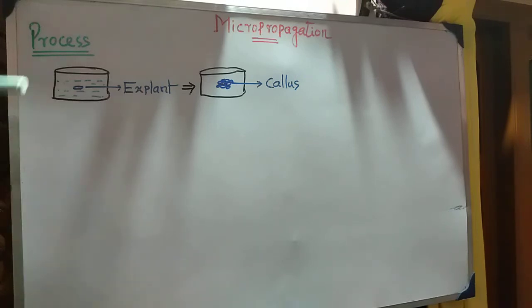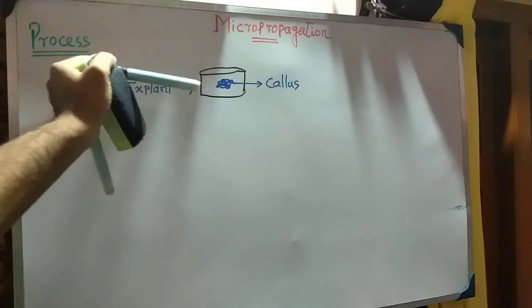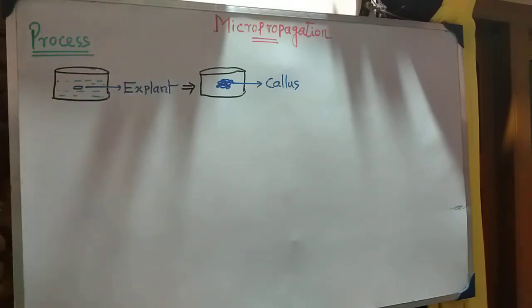We explained that the explant is a number of cells. We have cells that will grow and divide. It is a mass of identical cells. This is the callus that we have.